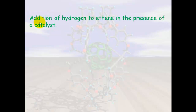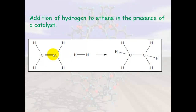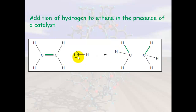An example of an addition reaction is the addition of hydrogen to ethene in the presence of a catalyst. You need a catalyst and energy to break the double bond. The double bond opens up and hydrogen is added — one hydrogen on each side. This is why it's called an addition reaction, because you're adding these atoms to the molecule.